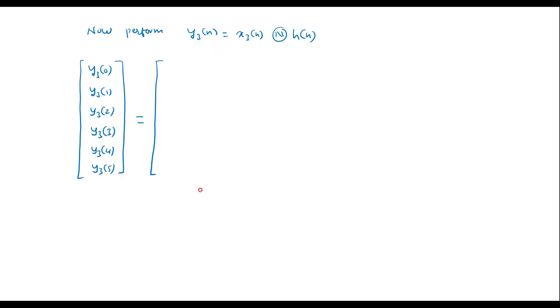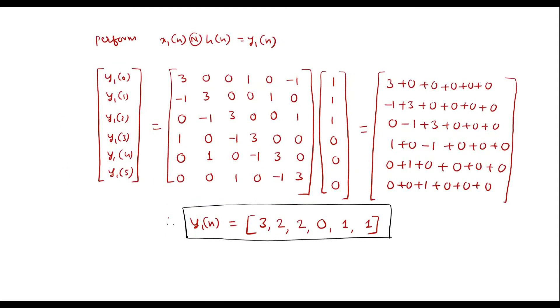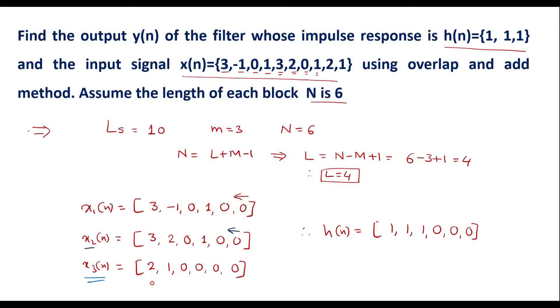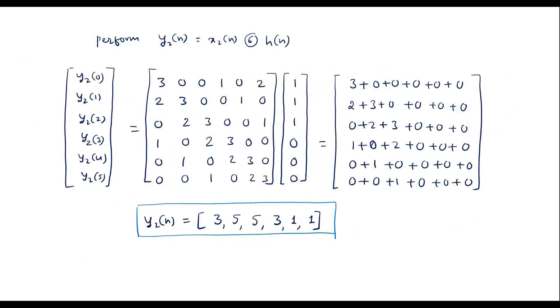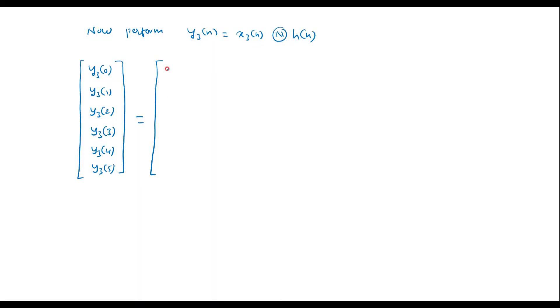Write the x3[n] sequence vertically: 2, 1, 0, 0, 0, 0. Then write the same sequence in reverse order to form the first row of the circulant matrix: 0, 0, 0, 0, 1, 2, and generate successive cyclic shifts for the remaining rows.